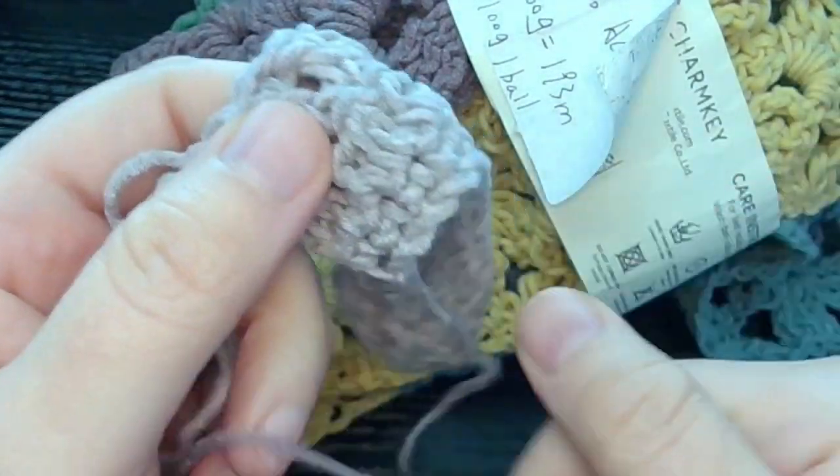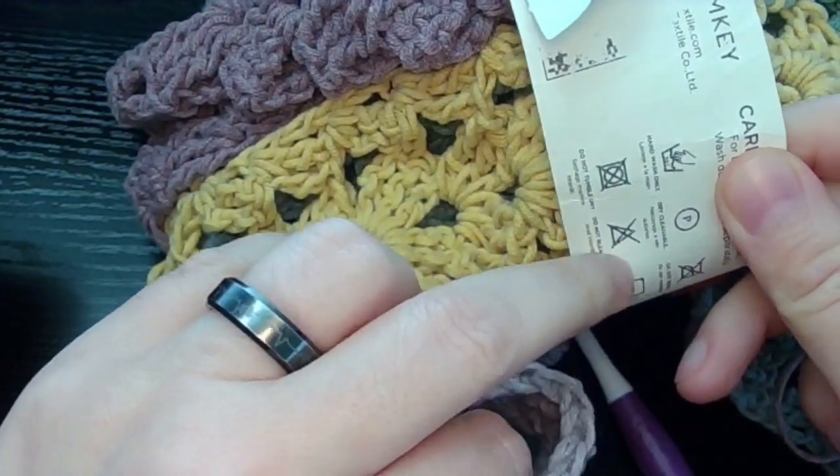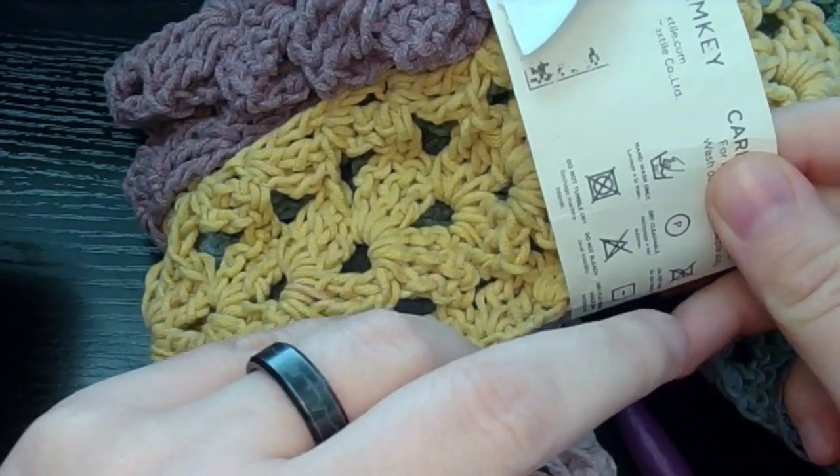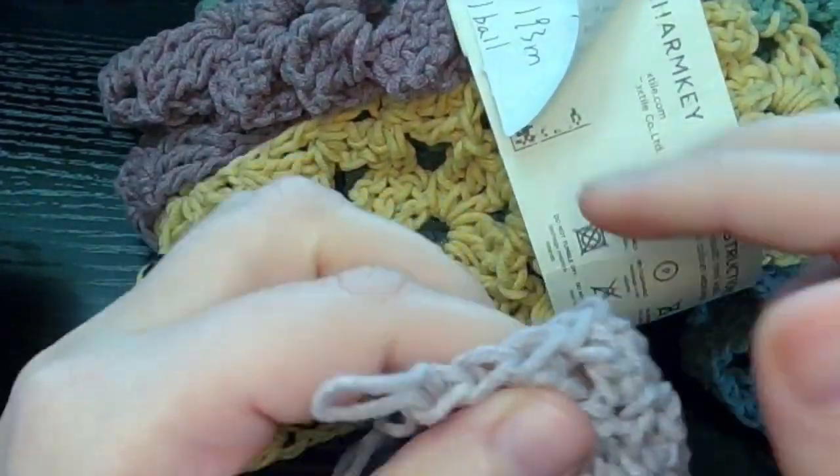But when you compare it to the Caron it's not far off from what they consider a four weight. What do you think? Does it look more like a three weight or a four weight on this video? If you watch the next video it's going to look totally different from this one.